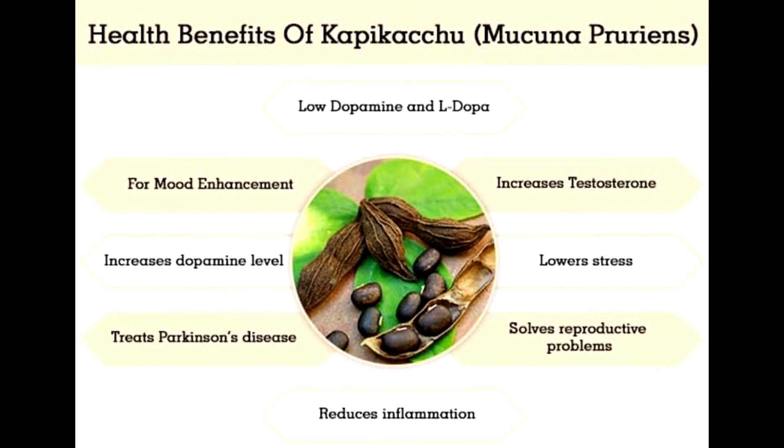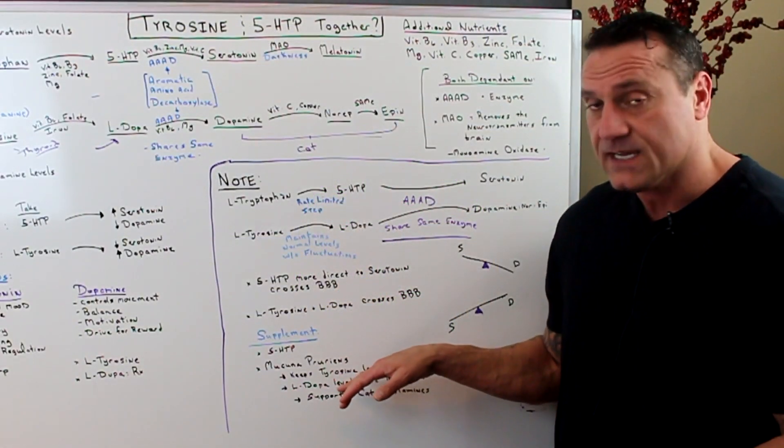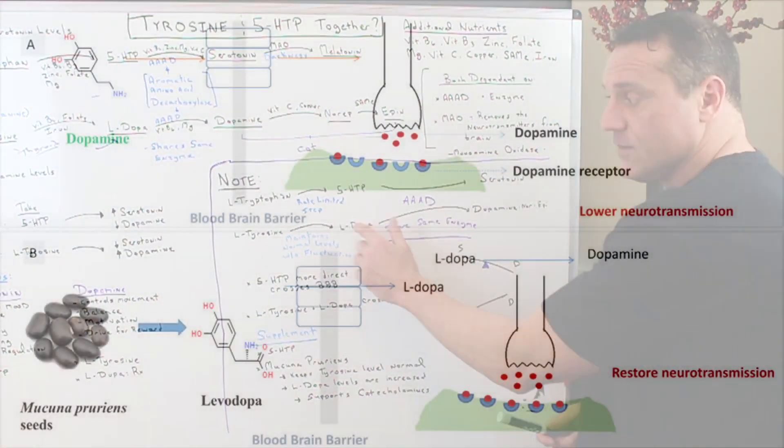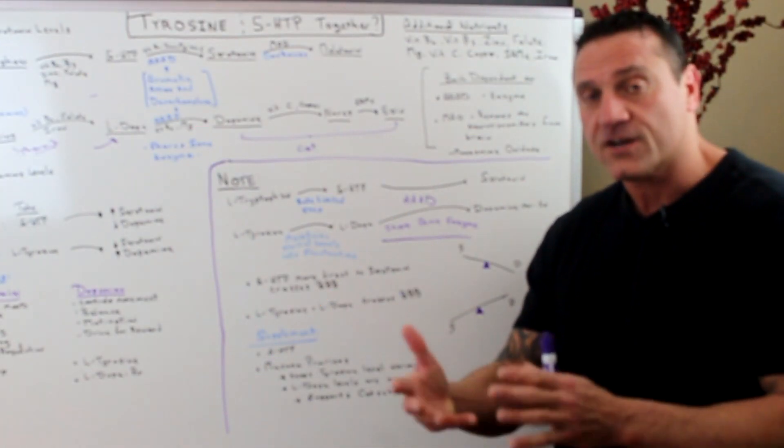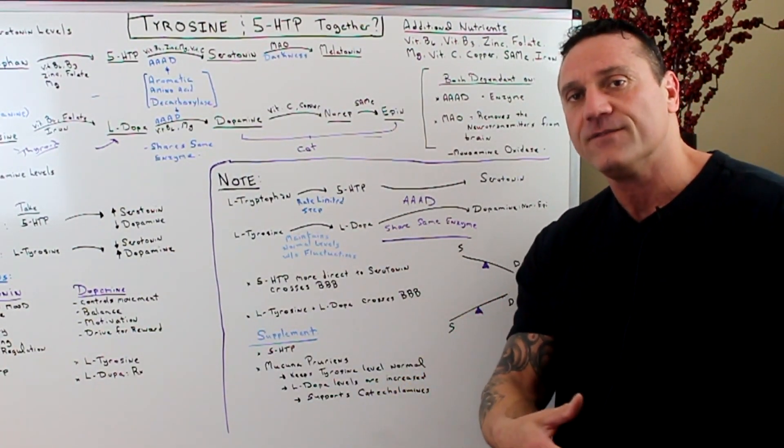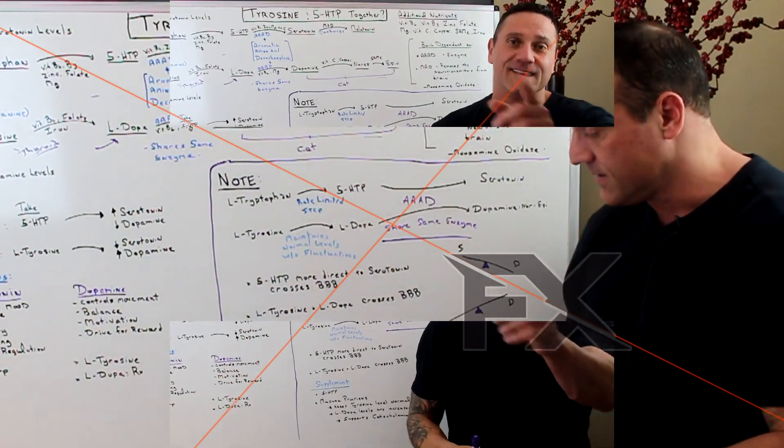Now mucuna pruriens, I did a video, I put the link down below. What this does, it hijacks the L-DOPA system without affecting tyrosine. So the L-DOPA levels are increased, which bleeds into the catecholamines, but it doesn't affect the thyroid, which is great for people who have hyperthyroid or Hashimoto's.